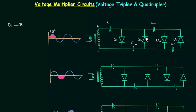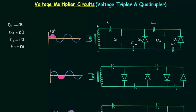Diode D2 is reverse biased because the N side is connected to the positive terminal and the P side is connected to the negative terminal. Diode D3 is forward biased and D4 is reverse biased. Since all four diodes are ideal, D1 and D3 are replaced with short circuits, while D2 and D4 are replaced with open circuits.